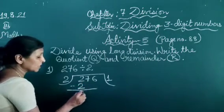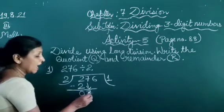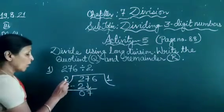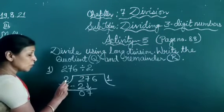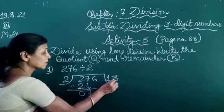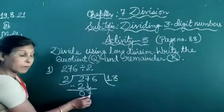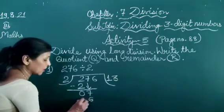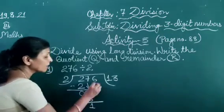Then subtract it — 0 comes. Then this next digit we write it here, and this is greater than the divisor. Now tell the table of 2: 2 ones are 2, 2 twos are 4, 2 threes are 6, 2 fours are 8 — that is more than this number. So we can take 2 threes are 6. Subtract it, then 1 comes.